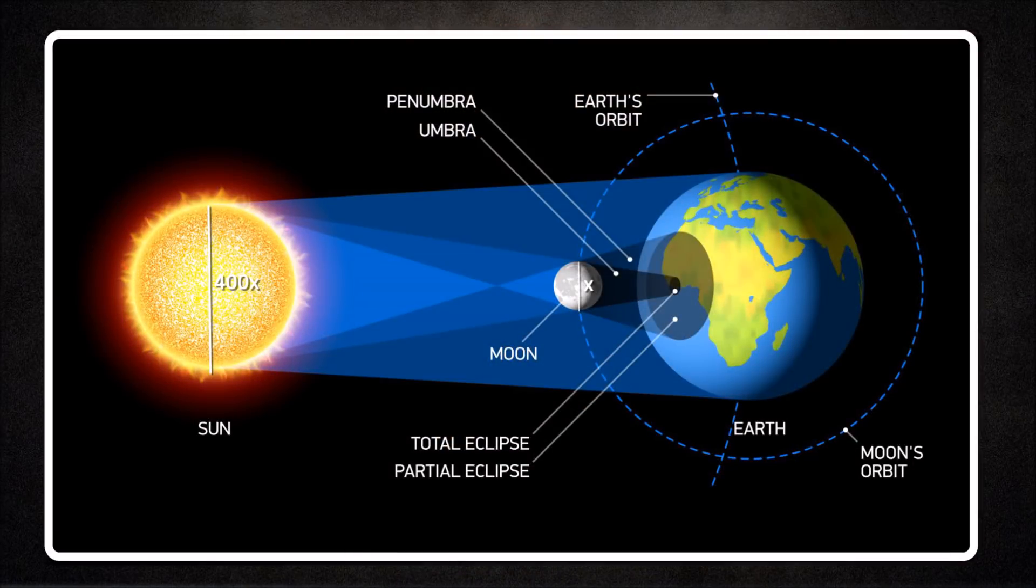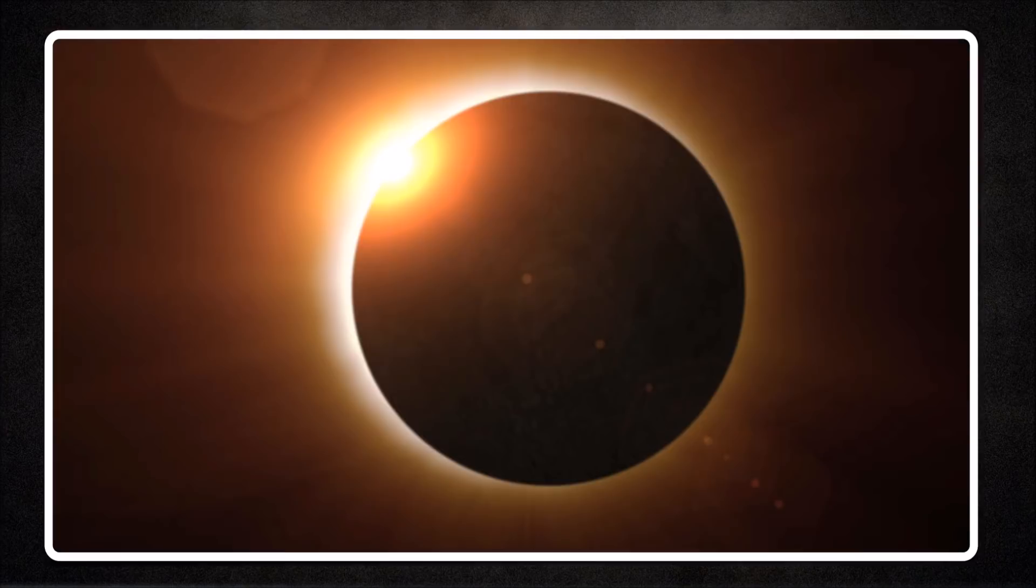It is amazing when you think about the coincidence that our sun is almost 400 times larger in diameter than our moon and it's also 400 times farther away. This gives us an almost perfect fit for a total solar eclipse.